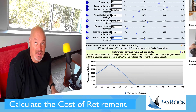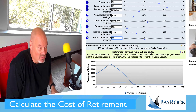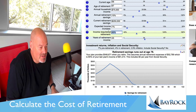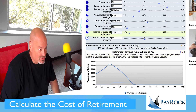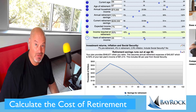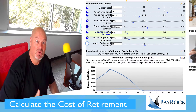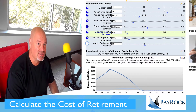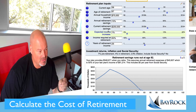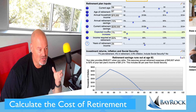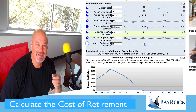Here we go — retirement savings runs out at age 78. Wow. What if I said I could live on 50%? Then it runs out at 82. And this is the whole point of this exercise — for you to plug in some numbers and do a little analysis, a little thinking about what it's going to cost you to retire.